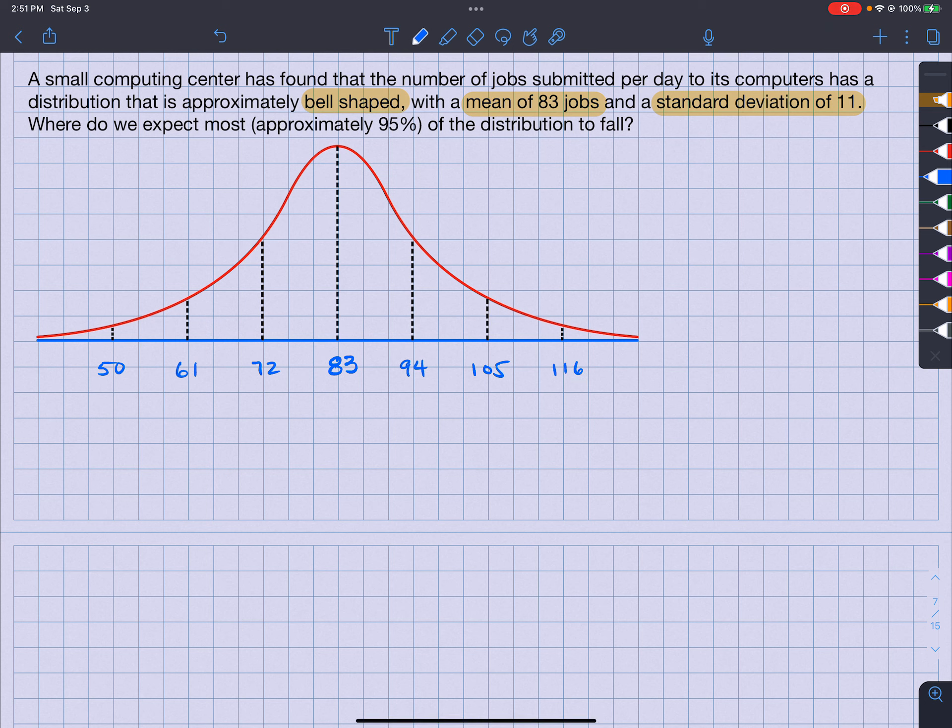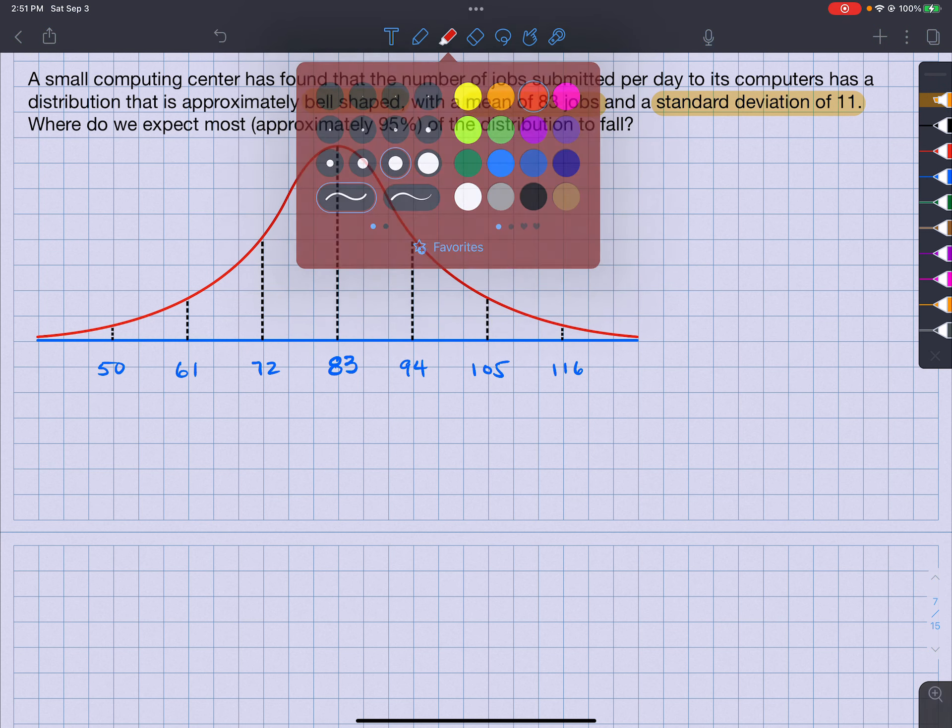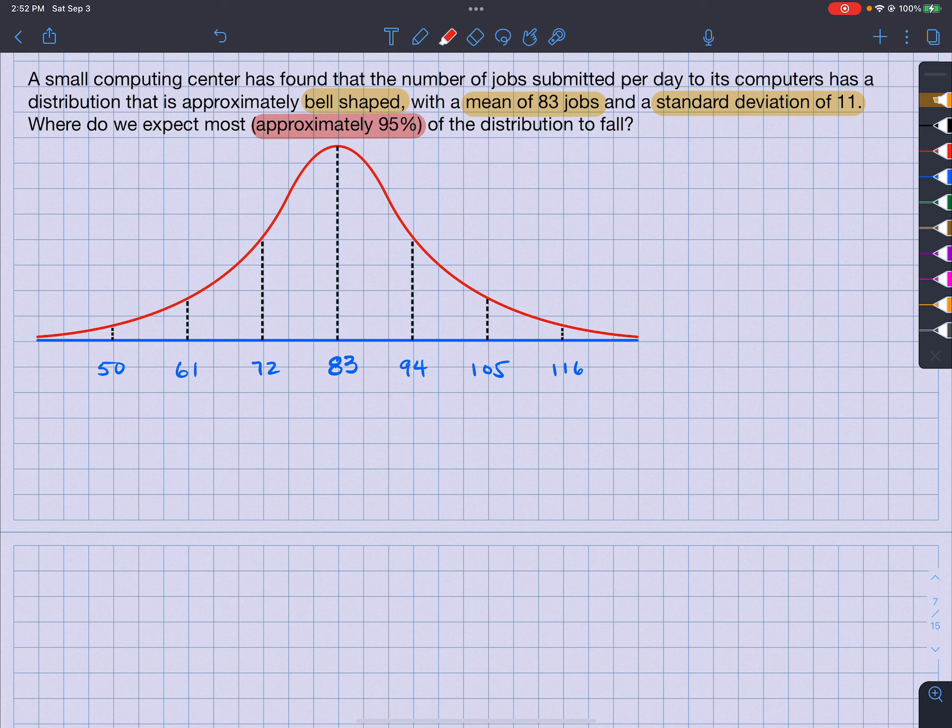So the 95% tells me that I am going to be two standard deviations away from the mean. Meaning that I should be going from here. That's bad. Let's try this. I should be in here. There we go. So I should be everything in here.